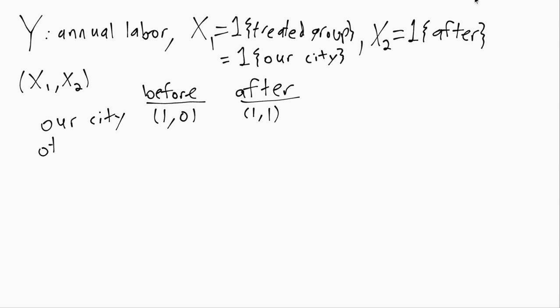If instead we're looking at somebody in a different other city in the before time period, X1 is equal to 0 because X2 is equal to 0 because we are not in the after period.